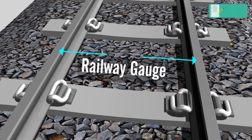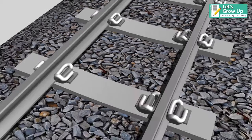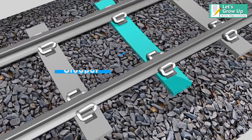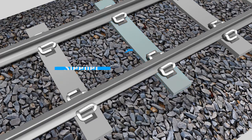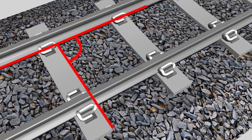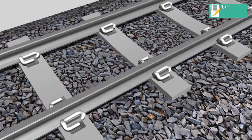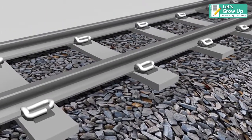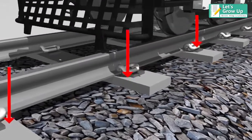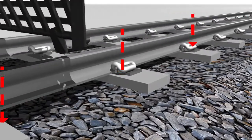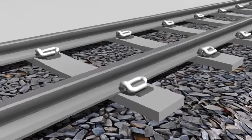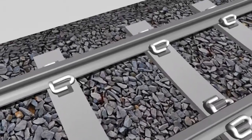The wooden or concrete supports for the rail tracks are known as a sleeper — 'sleeper' in British English or 'cross tie' in American English. It is a rectangular support for the rail tracks, laid perpendicular to the rails. Sleepers transfer loads to the track ballast and subgrade.